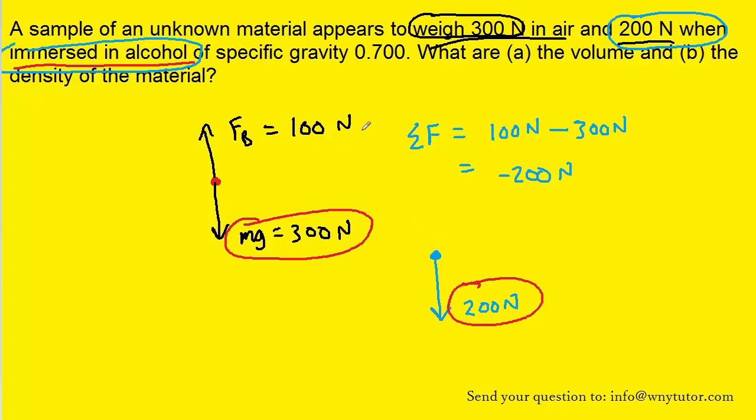Because there's this upward acting 100 newton force called the buoyant force, that's basically deducting 100 newtons from the 300 to give us 200. So the buoyant force must be 100 newtons total.